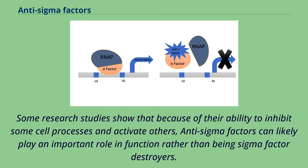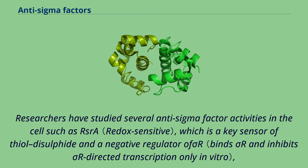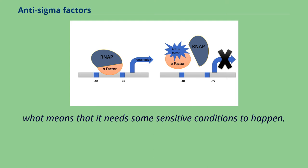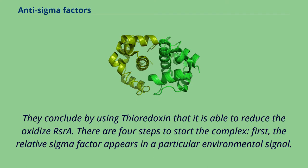Some research studies show that because of their ability to inhibit some cell processes and activate others, anti-sigma factors can likely play an important role in cell function rather than being mere sigma factor destroyers. Researchers have studied several anti-sigma factor activities in the cell, such as RZRA, which is a key sensor of thiol-disulfide and a negative regulator of sigma-R. They conclude, by using thioredoxin, that it is able to reduce the oxidized RZRA.